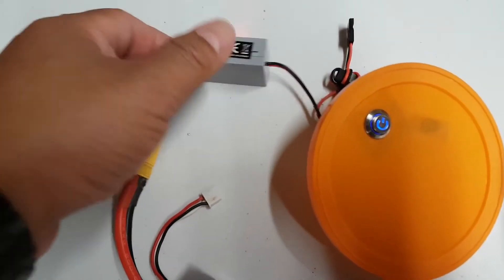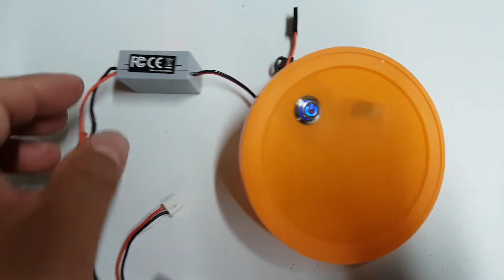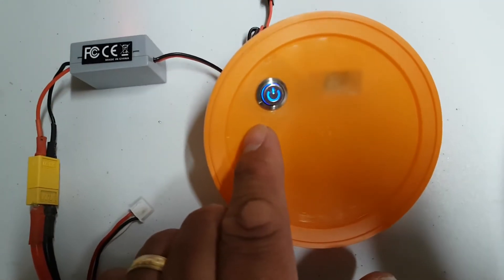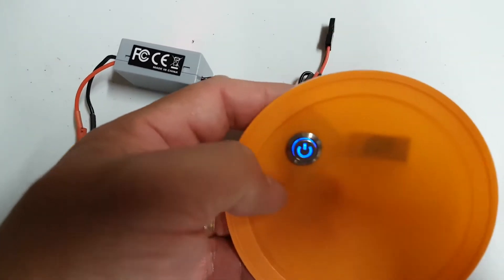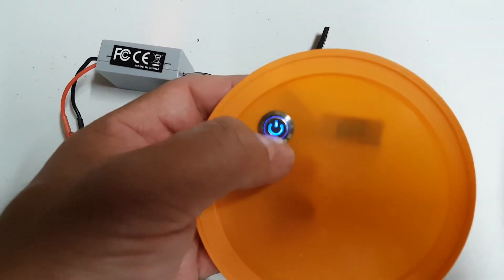Alright so I have it plugged in here so my Ubex is showing power. You'll notice the switch is illuminated but I don't have power going to the receiver yet until I depress this button.